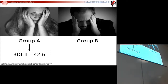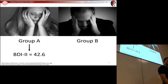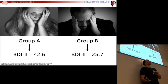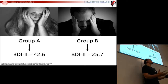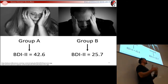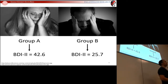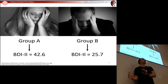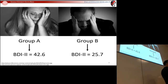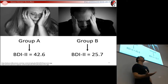As measured by the Beck Depression Inventory, Group A — your clients, your patients — they have an average depression of 42.6. Group B, on the other hand, has an average depression of 25.7, so they actually have lower average depression. Now, one of the things you need to do is monitor these patients and make sure that the ones in danger of harming themselves get placed on suicide watch. The question becomes: if suicide is associated with higher levels of depression, which one of these groups would be more in danger of suicide?